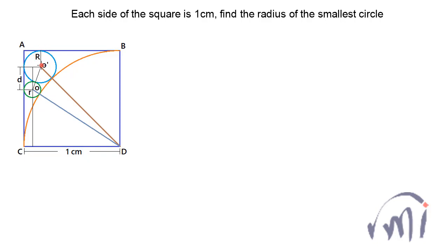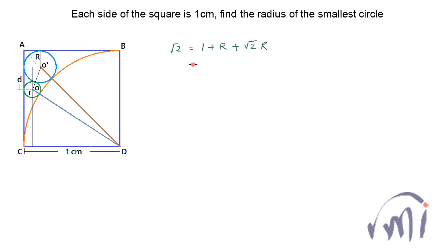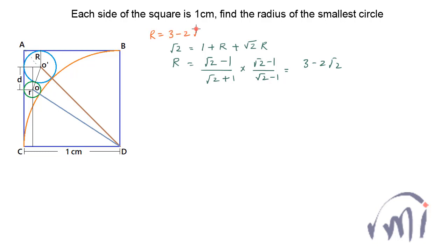Since radii are perpendicular to their tangents, this forms a small square whose each side equals R. That means the diagonal of this square is √2 · R. The diagonal AD equals √2, so: √2 = 1 + R + √2 · R, which gives R = (√2 − 1) / (√2 + 1). Multiplying by (√2 − 1)/(√2 − 1), we get R = 3 − 2√2.